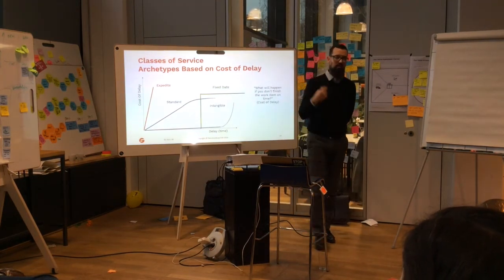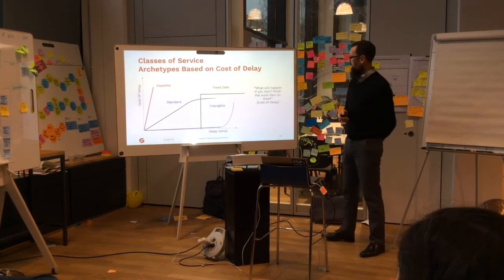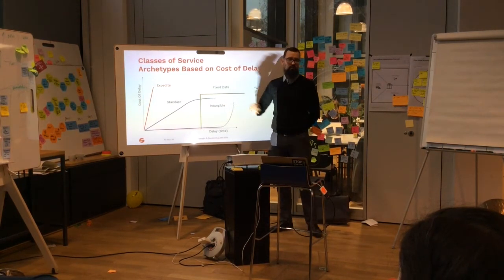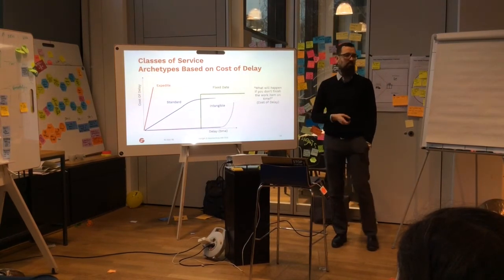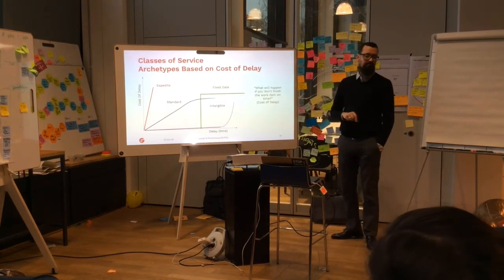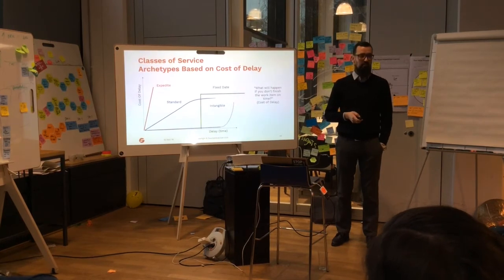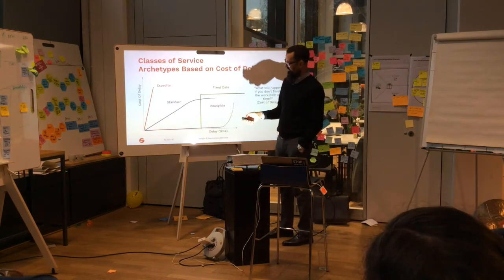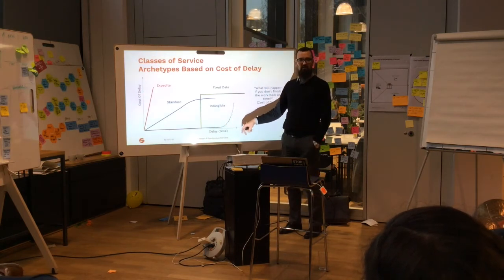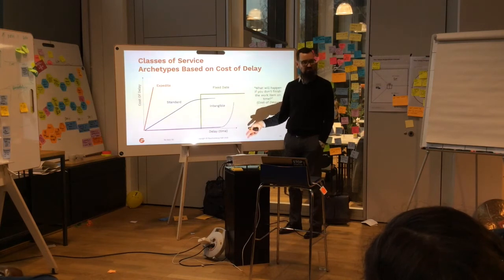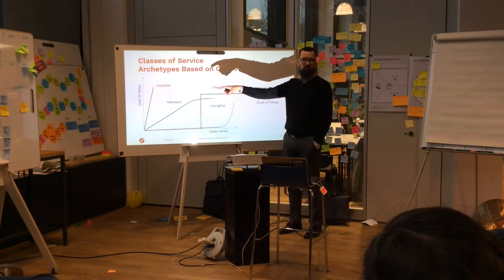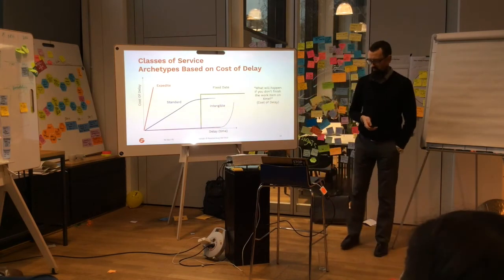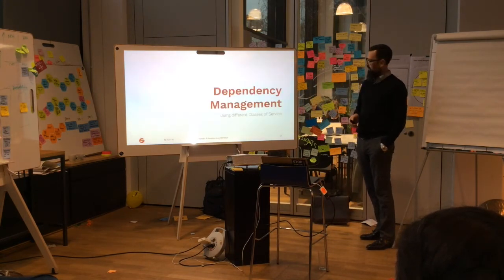These are the standard four archetypes based on cost of delay. We have Standard - that would be nice if you already had it, but we don't. Then Fixed Date - a great example is GDPR, legal changes, or an Oracle database update. Then Expedite - I call them 'burning guinea pigs' - your database is down, you can't access something, really high risk events. And my favorites are the Intangible class - refactoring and doing important but not urgent work. The problem with those items is they become more and more urgent, and then become expedite. They hunt you down eventually if you don't pay attention.